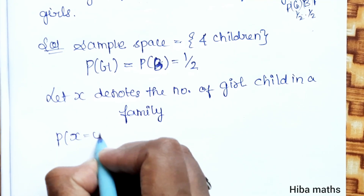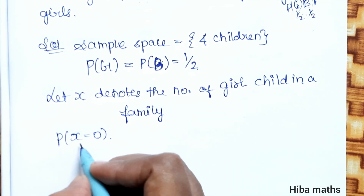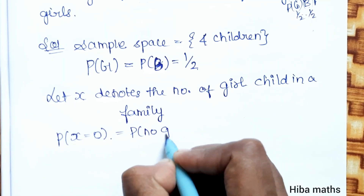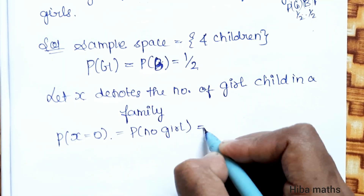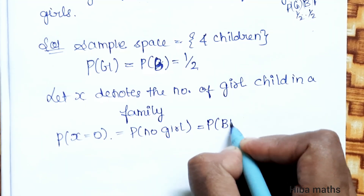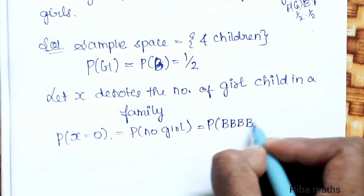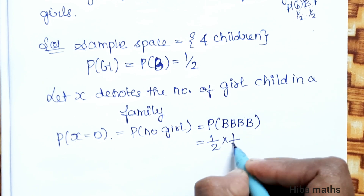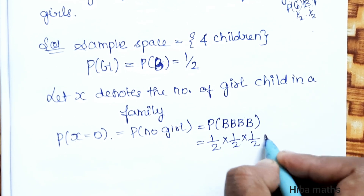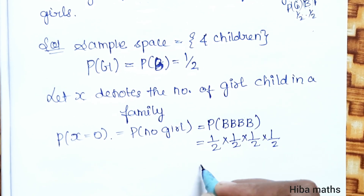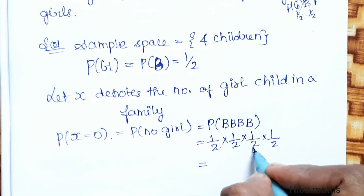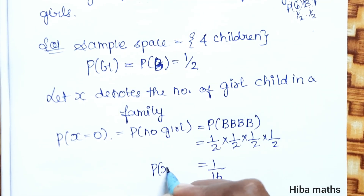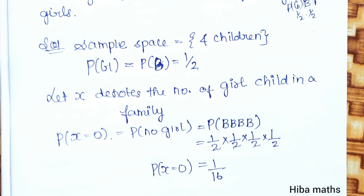First, P(X = 0): X is the number of girls, so X = 0 means no girls — all 4 children are boys. P(X = 0) = (1/2) × (1/2) × (1/2) × (1/2) = 1/16.